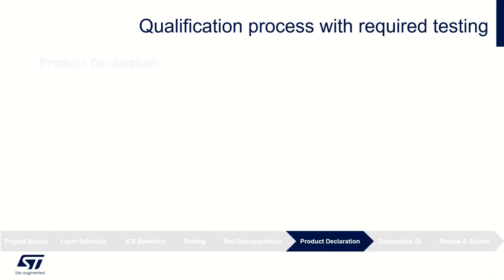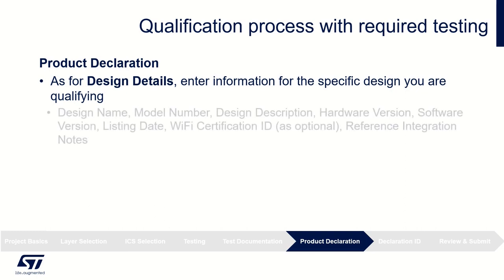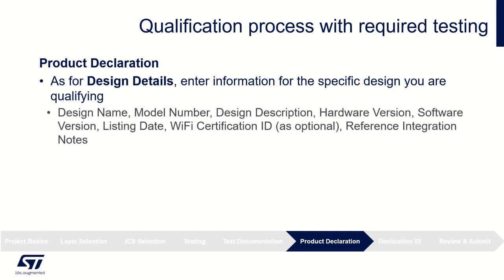The next tab is about product declaration. You are asked to fill in particular information about the design. For design details, enter information for the specific design you are qualifying, including the design name, model number, design description, hardware and software version, listing date, Wi-Fi certification ID, and reference integration notes.